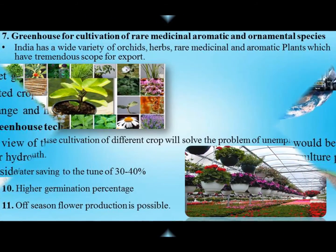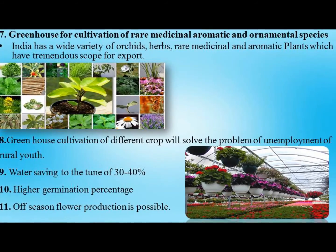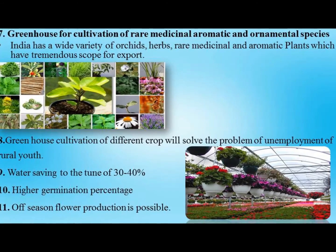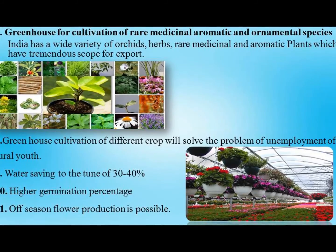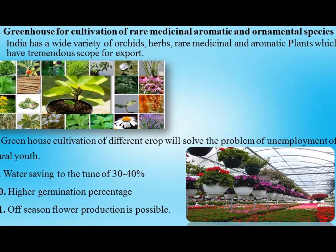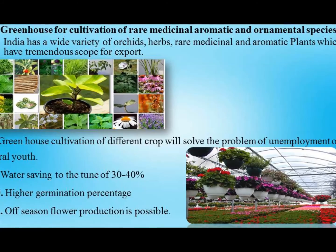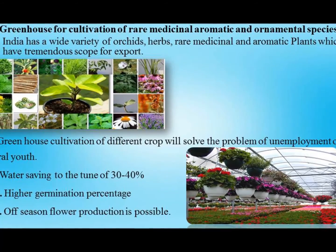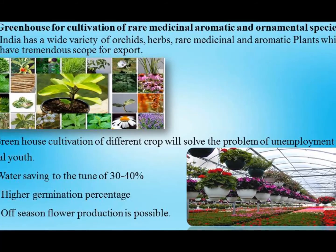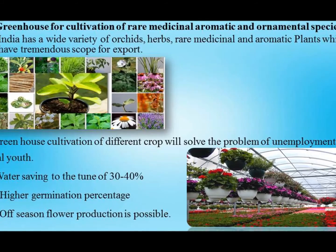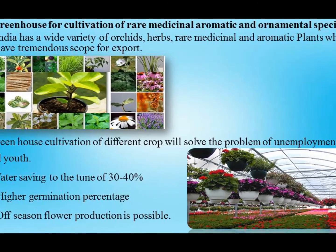The next importance is greenhouse for cultivation of rare medicinal, aromatic, and ornamental species. India has a wide variety of orchids, herbs, medicinal and aromatic plants which have tremendous scope for exports. Besides these potentialities, greenhouses also help to solve the problem of unemployment of rural youth, help to save water by about 30 to 40 percent, help in getting higher germination percentage, and also help in getting off-season cultivation of vegetables and flowers.